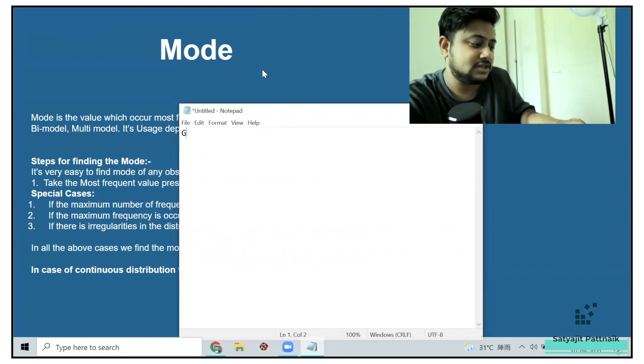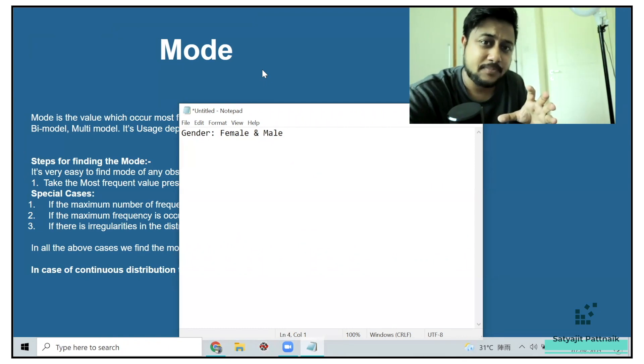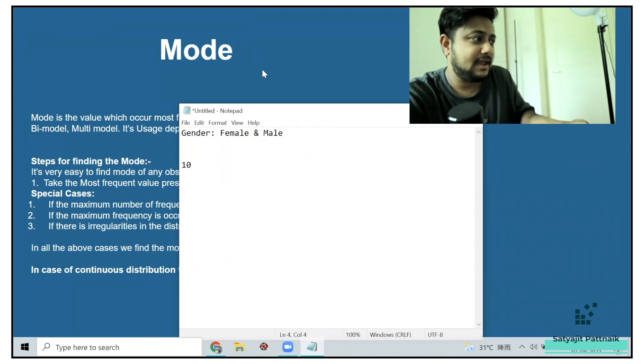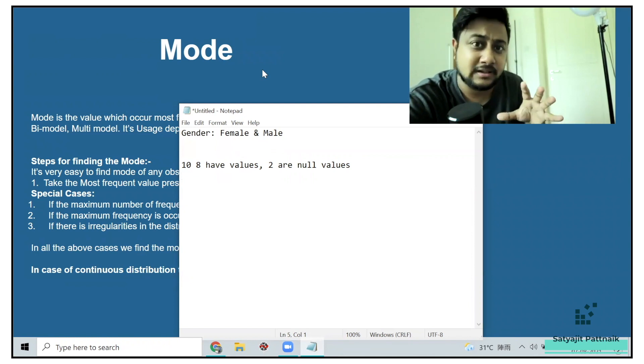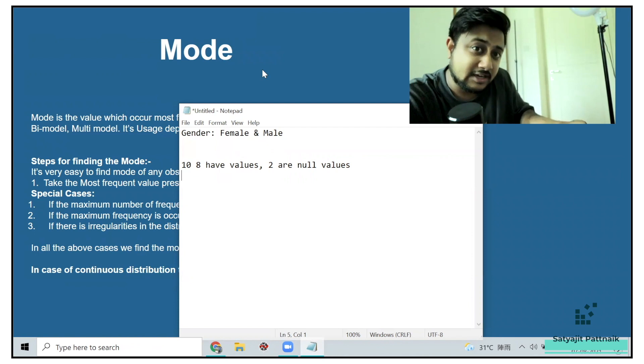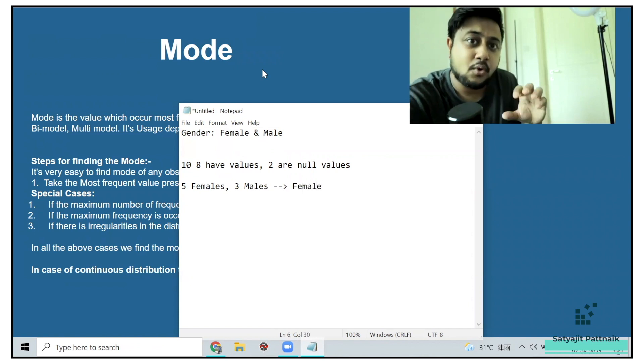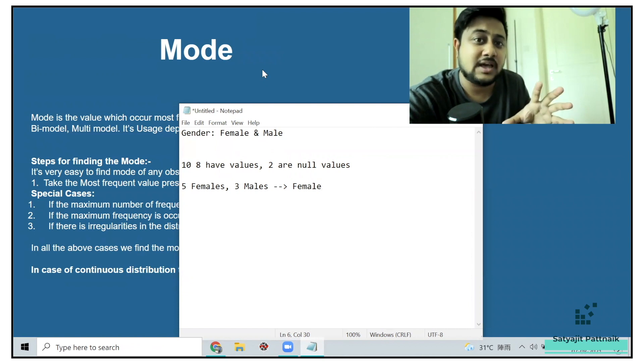Let's talk about mode first. Let's say I have a feature called as gender. I have female and male. Now let's say you have 10 records out of them, eight have values and two are null values. So do we impute them with male or female? That's the question. Now let's say out of the eight values, if you have five females and three males. So here, the mode is going to be female.